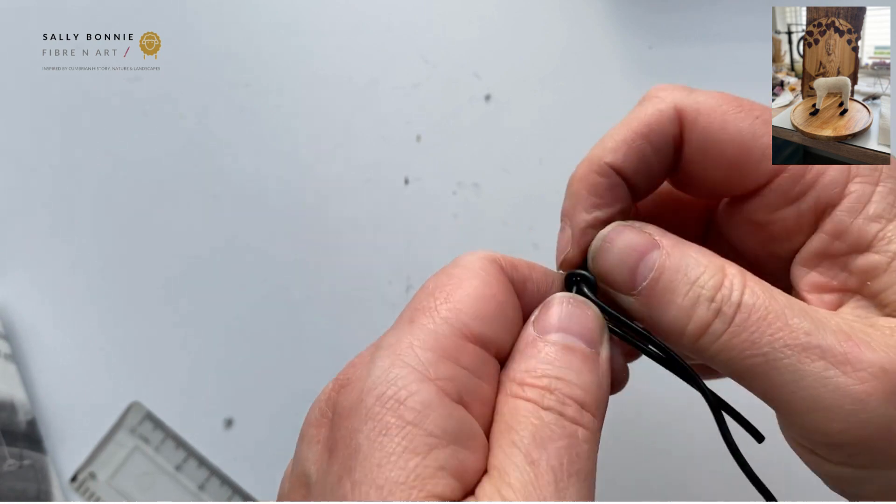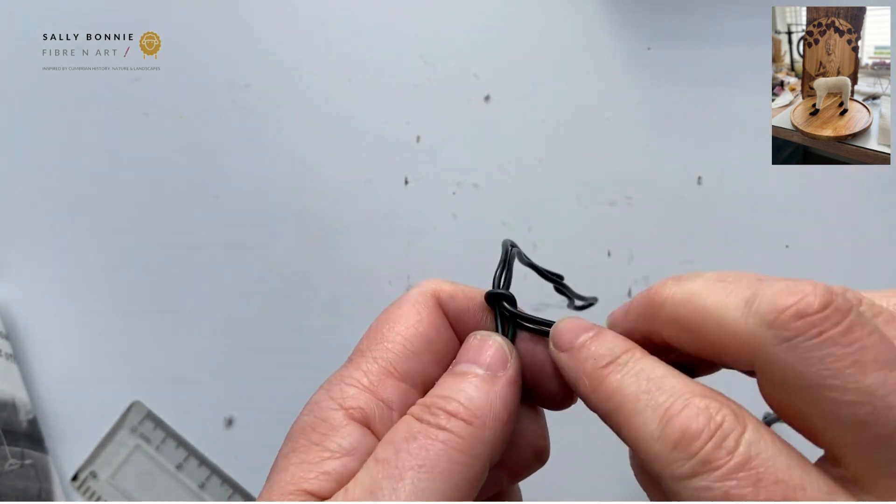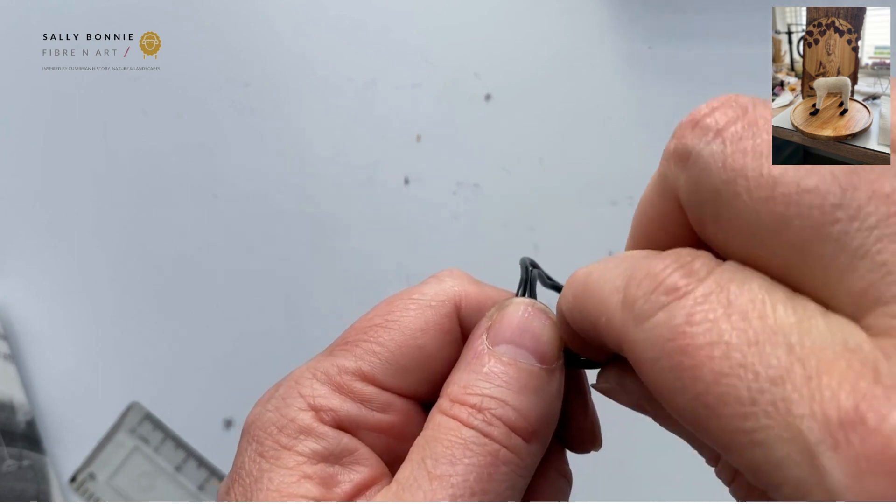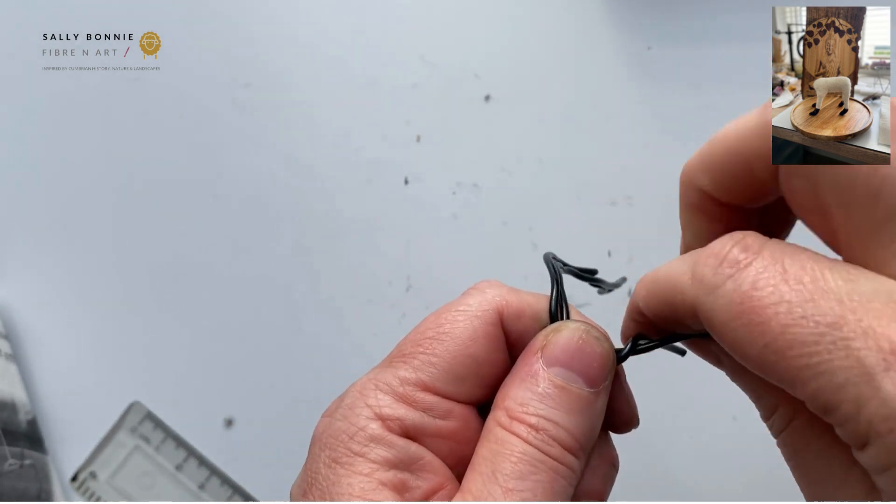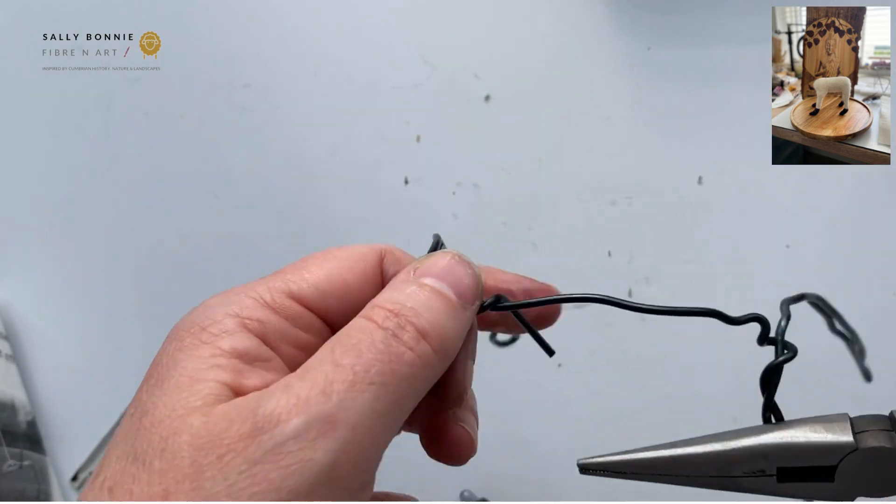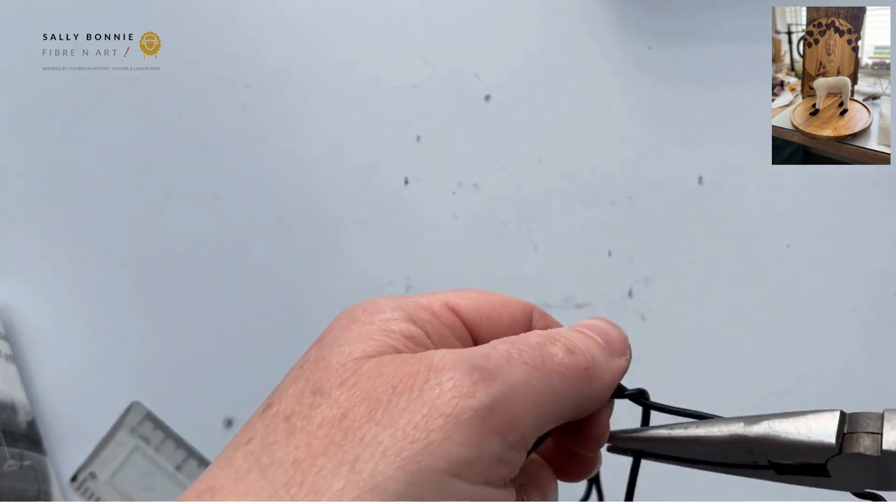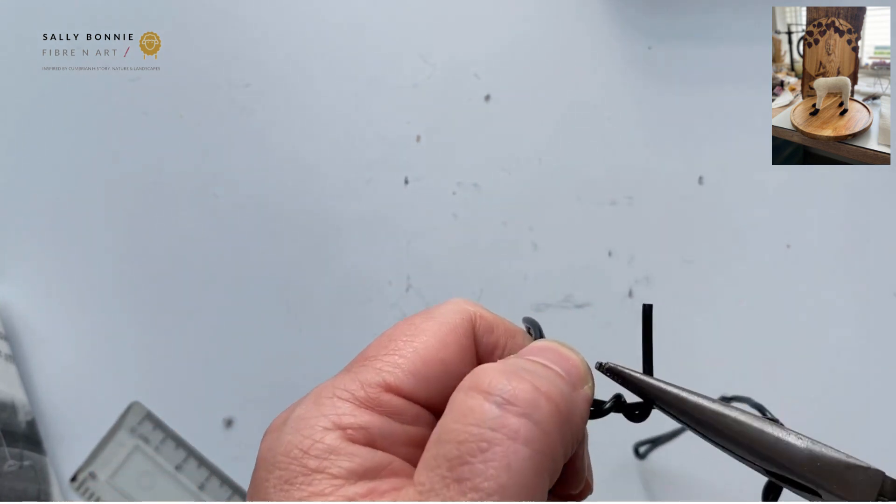And then just mold those into your arch and just do it one more time just to secure it in the middle. And then with whatever you have left, you just twist that around the back. And again, you know, use these if it makes that easier for you.